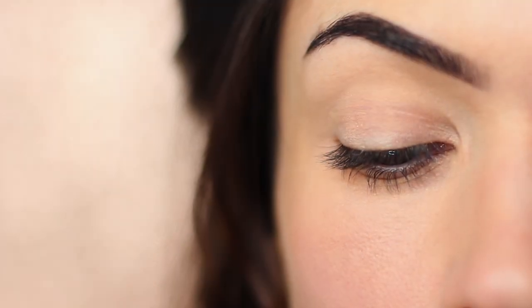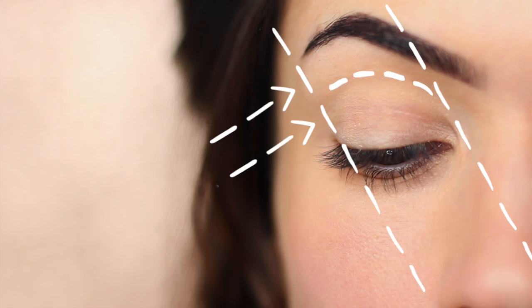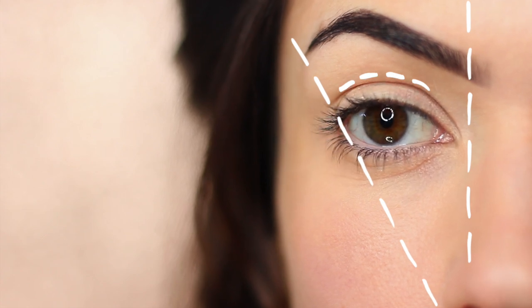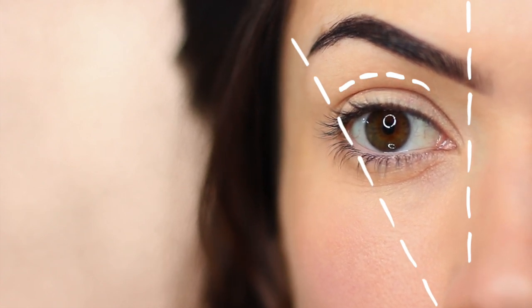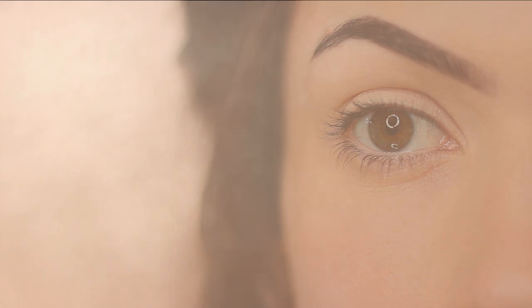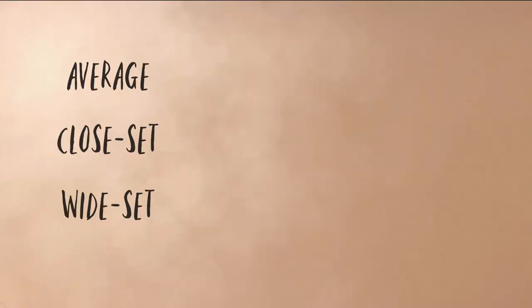In our previous video we talked about finding your eye spacing and how you can adjust your eyeshadow placement depending on your eye space. Eyebrow mapping actually follows a very similar guide to eyeshadow placement. So let's quickly refresh on eye spacing and eyeshadow placement. Whether you're hooded, round, or any other eye shape, you still fit into one of three categories: average, close, or wide set. This refers to the distance between the eyes.